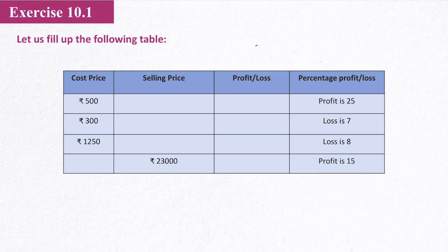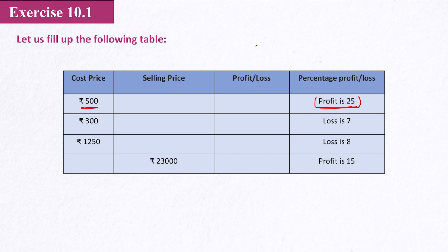The first question of 10.1 says: let us fill up the following table. In the first row, the cost price is given and the percentage profit or loss is given — the percentage profit is 25%. You have to find the selling price and profit or loss. In the same way, the second row has cost price 300 given and percentage of loss is given. You have to find the selling price and profit or loss.